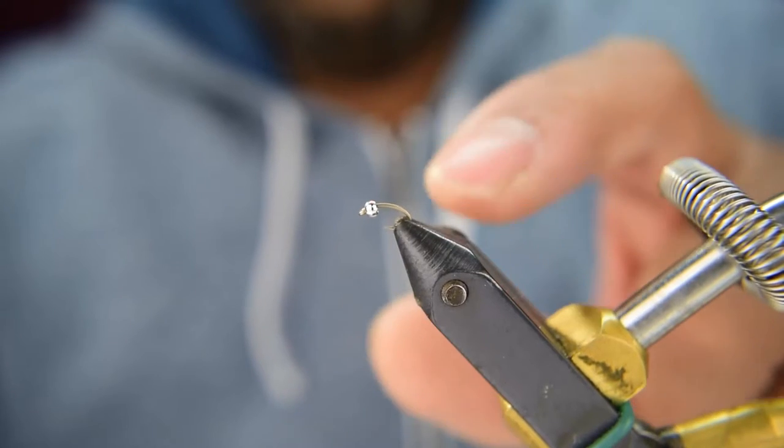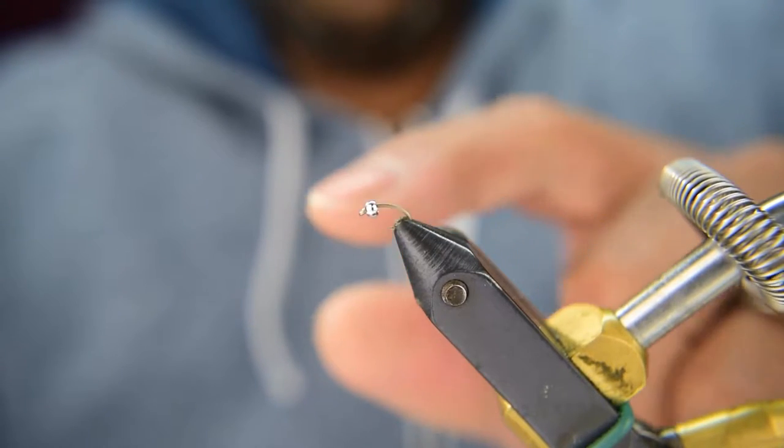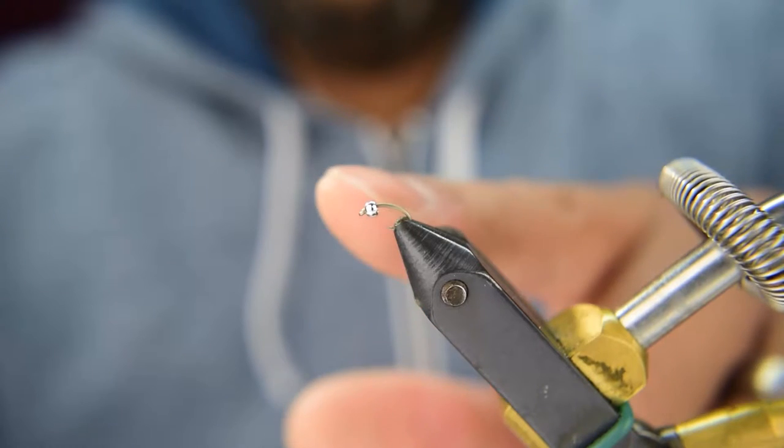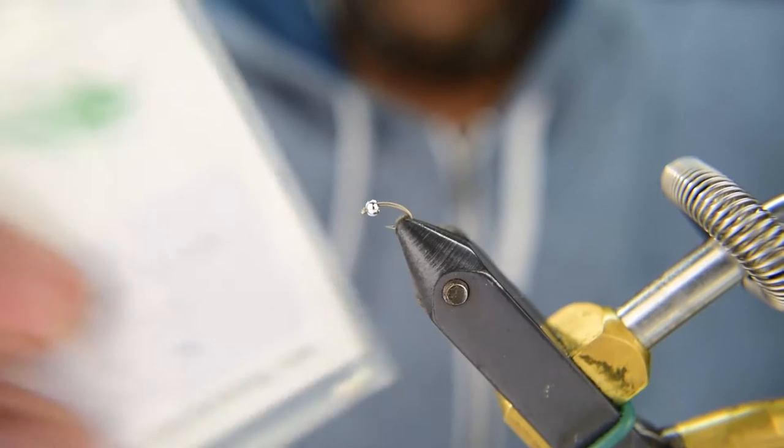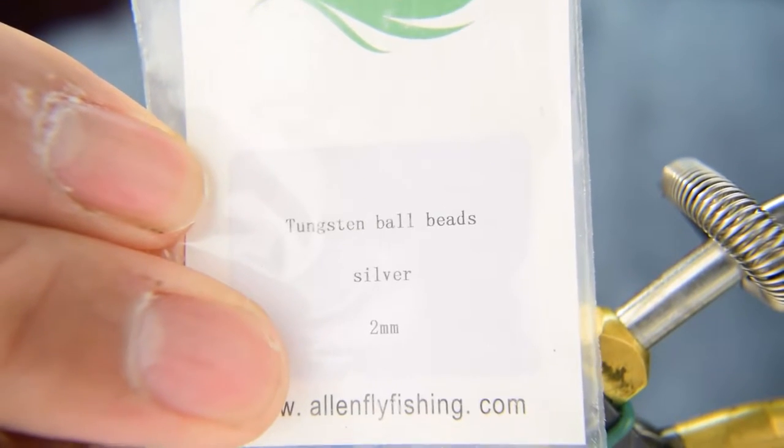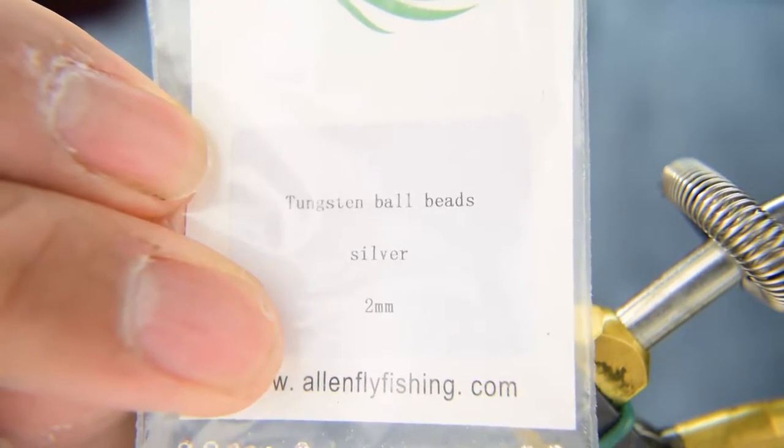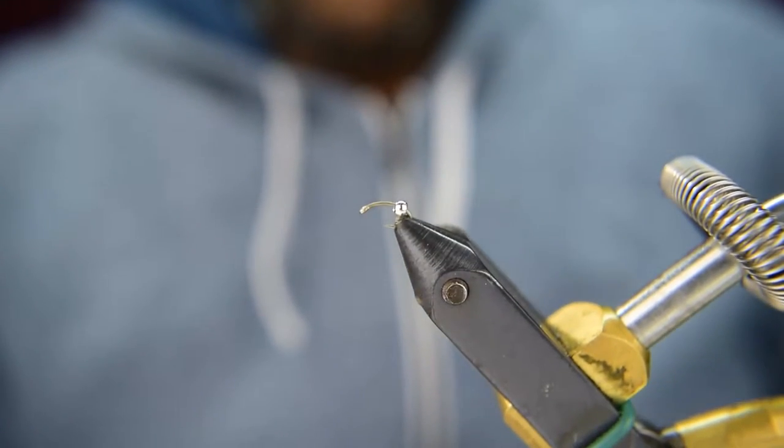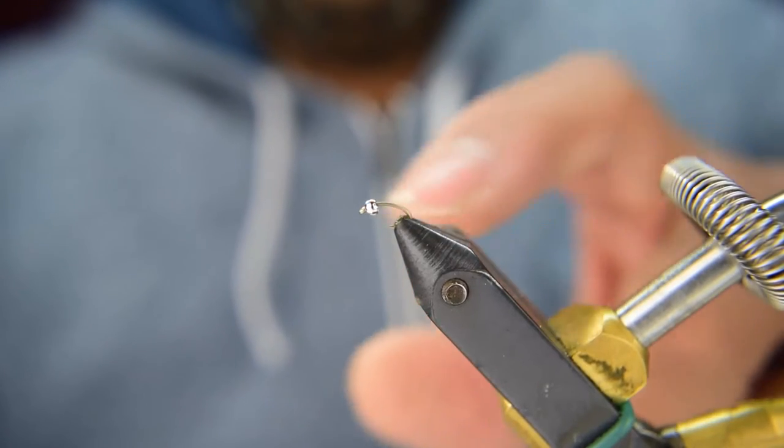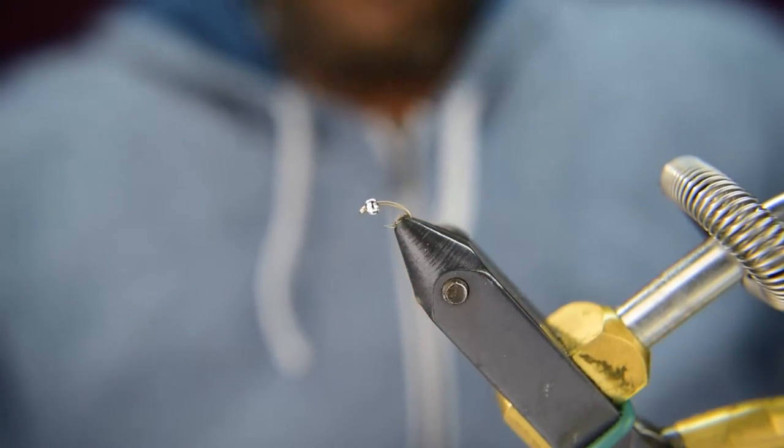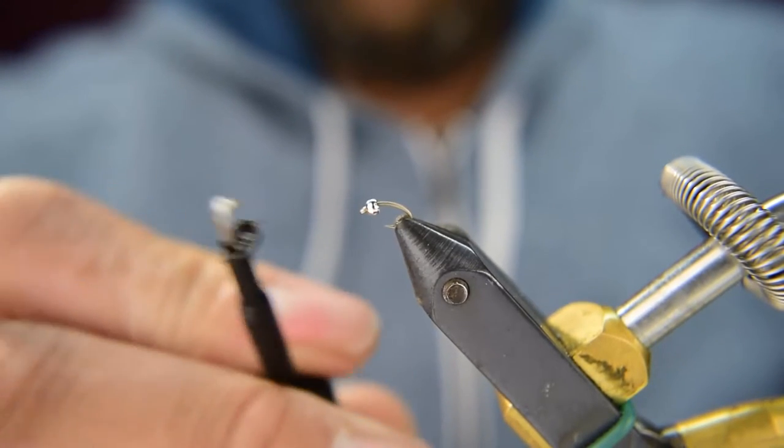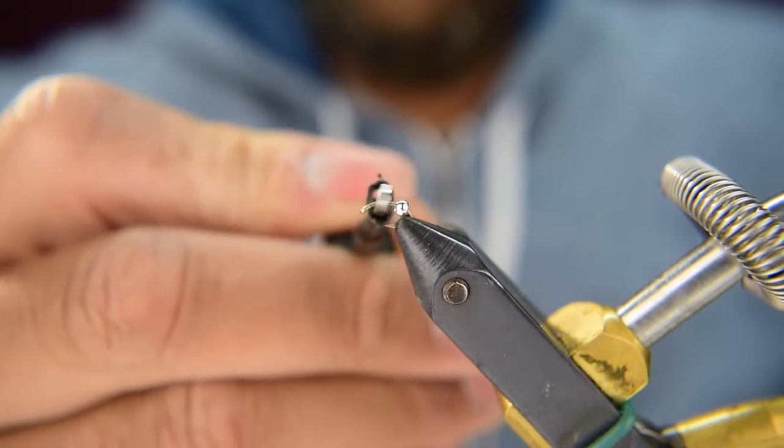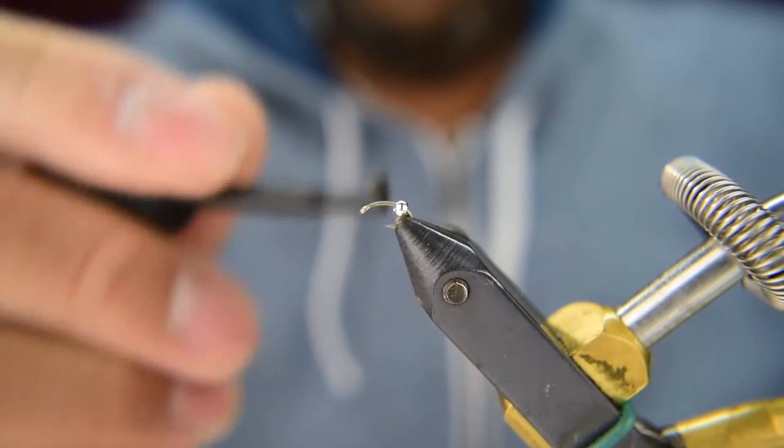Let's go ahead and get started. We already have the hook and the bead on the vise. It can be a little tricky to get this size bead onto the hook. The bead we're using, I forgot to go over that, is going to be a tungsten ball bead in a 2 millimeter, and these are also from Allen Fly Fishing. It's a little tough to get that bead onto that hook, but if you use some hackle pliers like these here, makes it a little easier. You just get it onto the hook off the vise and then just get the bead on there.